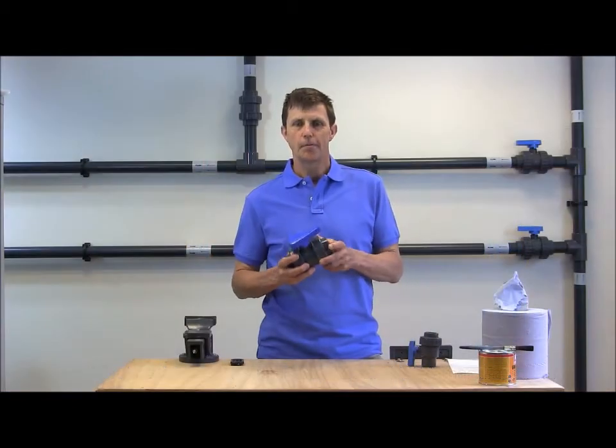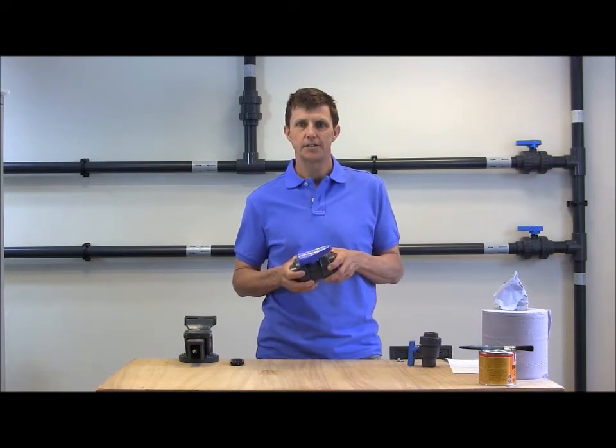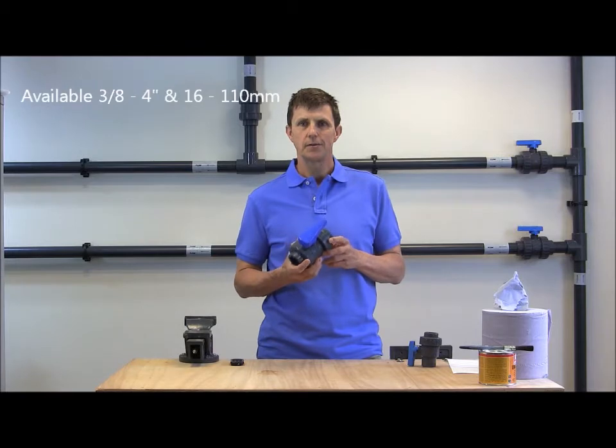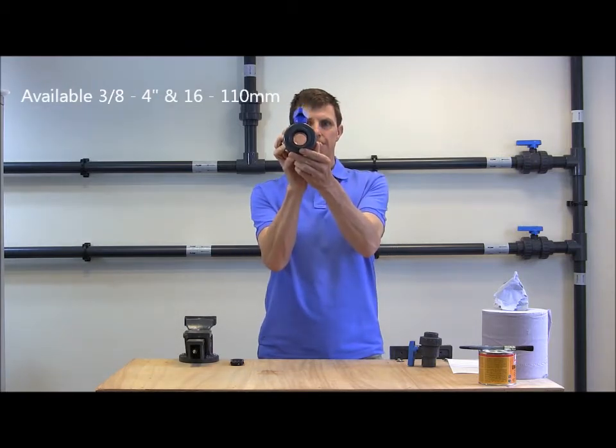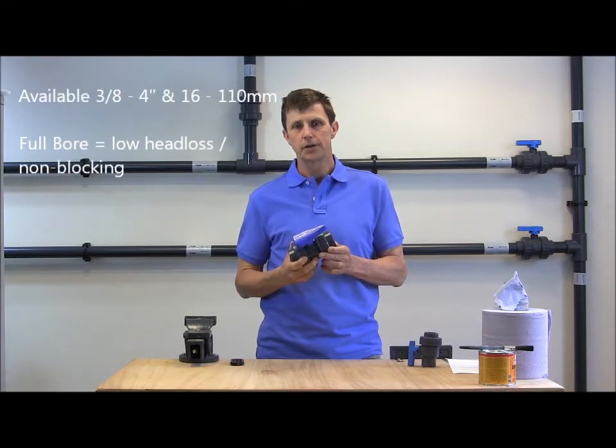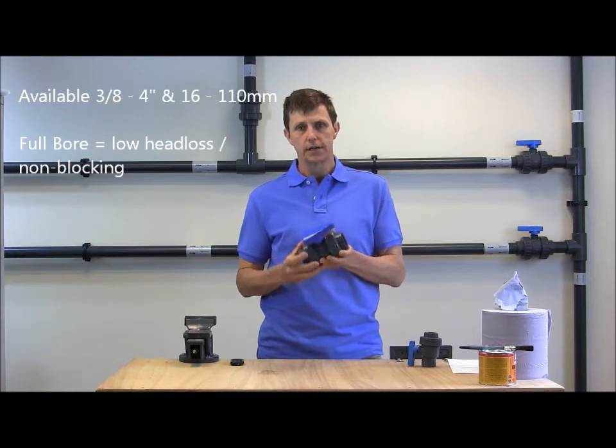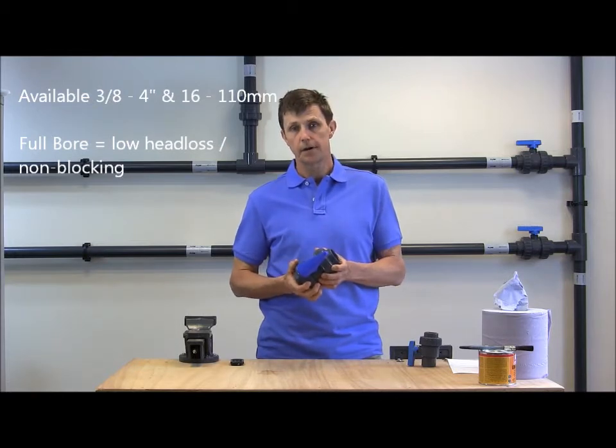Ball valves are probably the most common type of valve you find in pipe systems under 3 inches. That's because they're the lowest cost of any valve and also when they're fully open they run at a full bore, which means there's hardly any head loss but also that there's nowhere for debris or particles to get jammed and block the pipe system up.